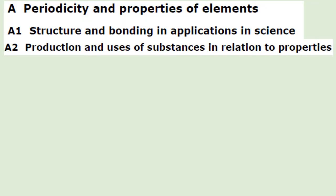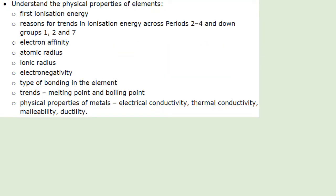So there's the chemistry assessment objectives A1 and A2, and we have been working down assessment objective two. This is the A2 list — not the full list — but in the first three lessons of this series we've already looked at first ionisation energy, trends in ionisation energy, electron affinity, atomic radius, ionic radius, and electronegativity. This lesson is going to focus on the last three: types of bonding in elements, trends in melting point and boiling point, and the physical properties of metals.